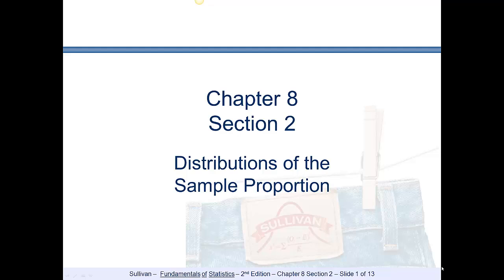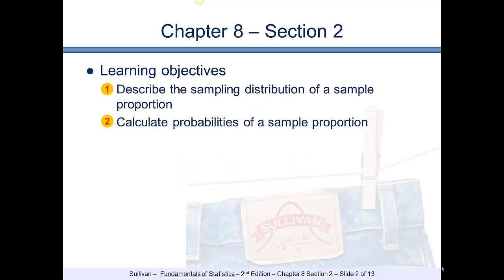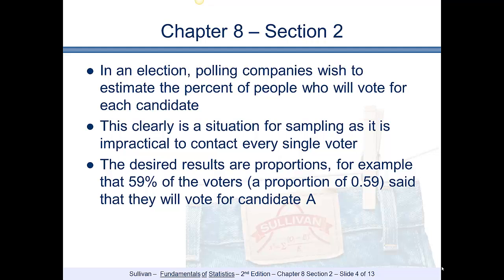We are now going to talk about the distribution of a sampling proportion using the central limit theorem, and we'll see how it works with a proportion. A proportion means the percent of the population that has a particular characteristic. We're going to describe the sampling distribution of a sample proportion and then calculate the probabilities for a sample proportion.